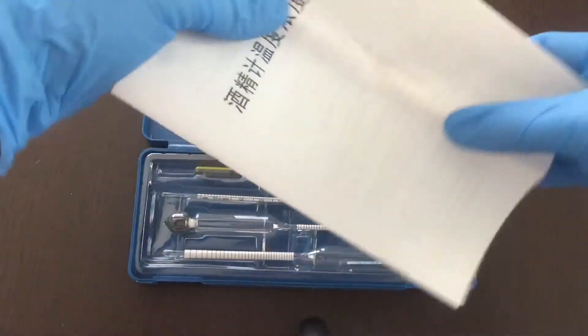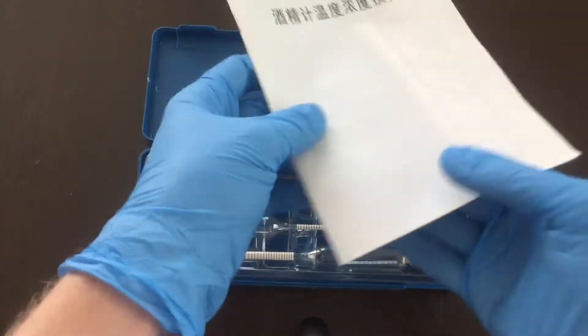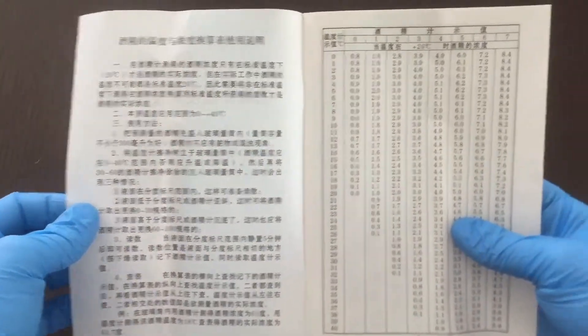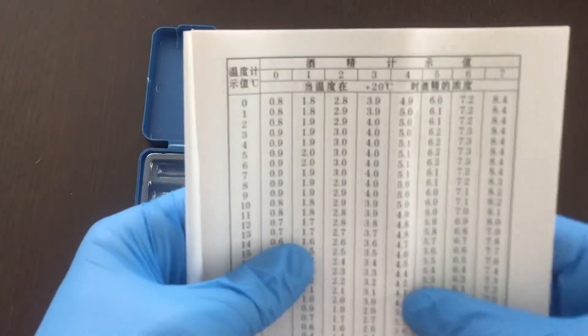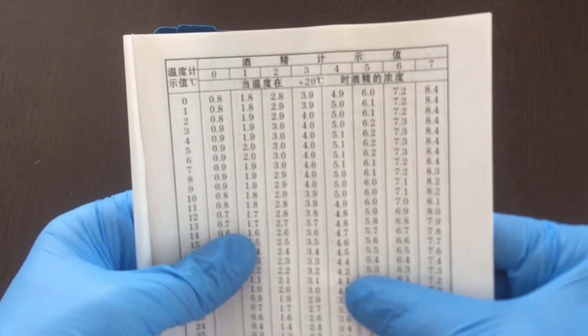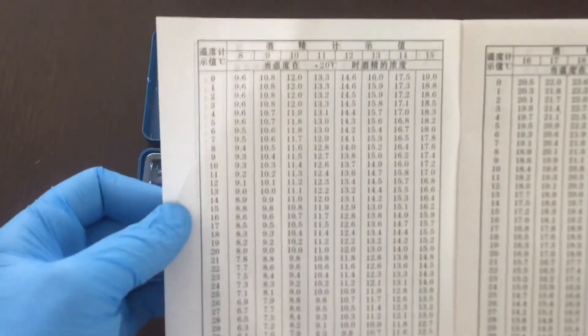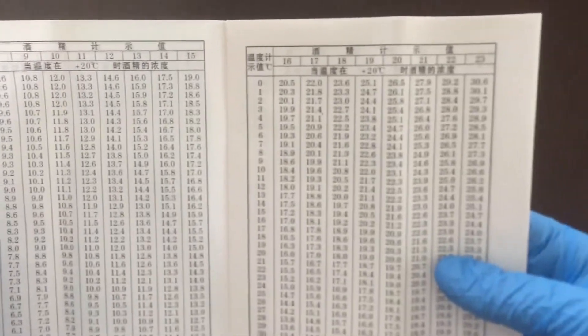This manual that came with it is pretty useless as I don't speak Chinese. It probably has some instructions there on the first page, I have no idea. And there is a table that seems to relate temperature to your concentration, so you can tabulate that, you can look it up.